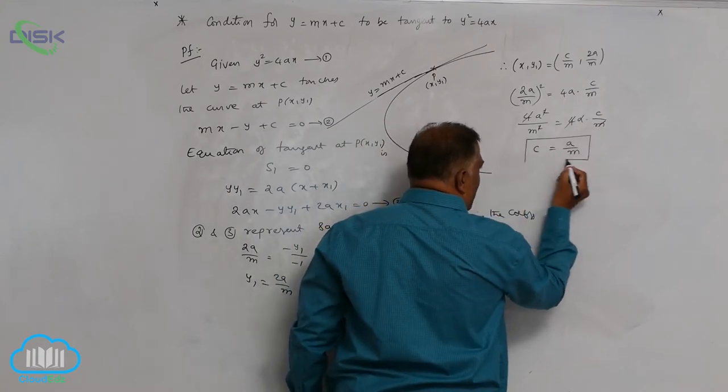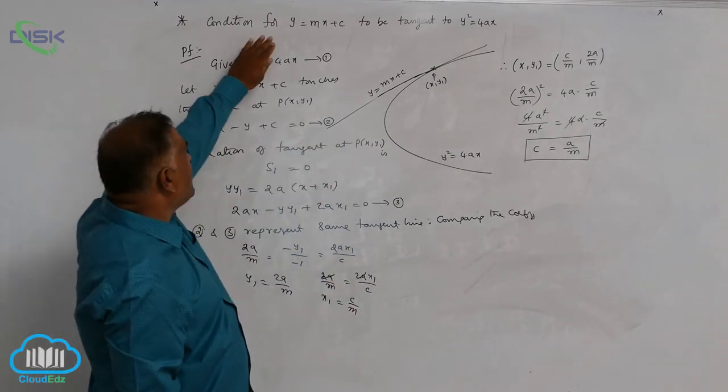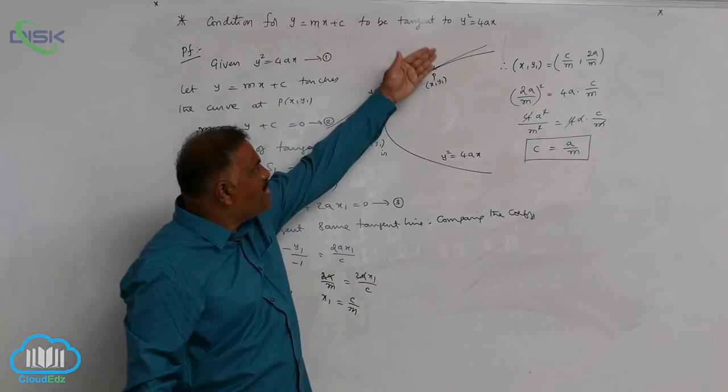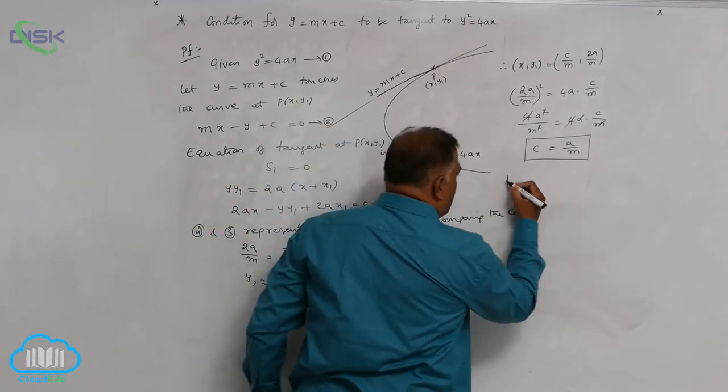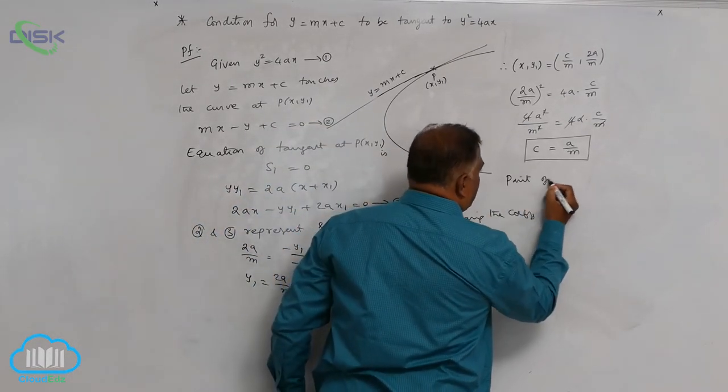This is the ideal condition for the line y = mx + c to be tangent to the parabola. The point of contact is given by (c/m, 2a/m).